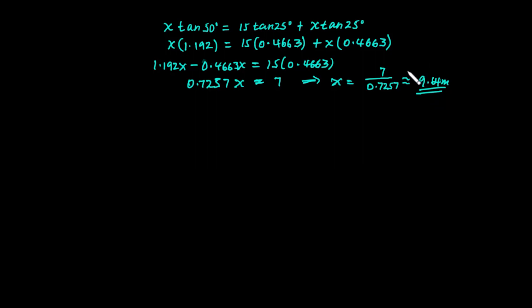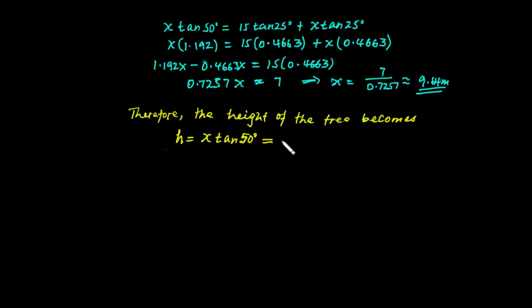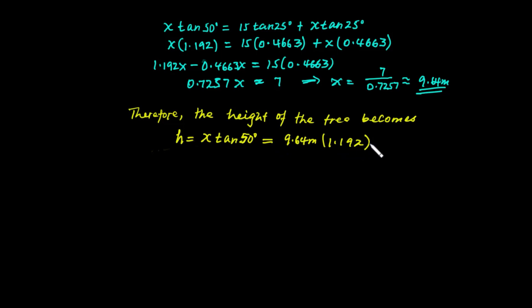The height of the tree H equals x times tan 50°. With x equal to approximately 9.4 meters, the height H equals 9.4 times tan 50°, which is approximately 11.5 meters.